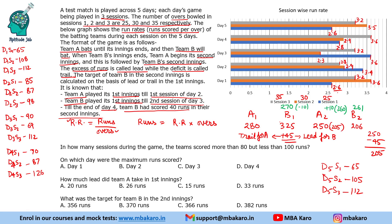Now we use the calculations to answer the questions. The first question is: in how many sessions during the game did the teams score more than 80 but less than 100 runs? Counting the sessions between 80 and 100 runs, there are 5 such sessions.